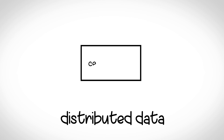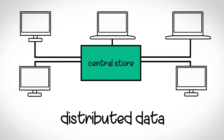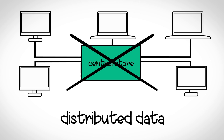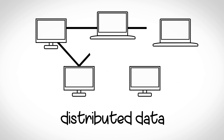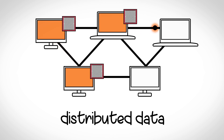Firstly, distributed data. A blockchain is a database that is distributed. This means there is no central place to store the data. Instead, all participants of the blockchain have their own copy of the data. To update the blockchain, a participant can suggest an update by transmitting it to all other participants.